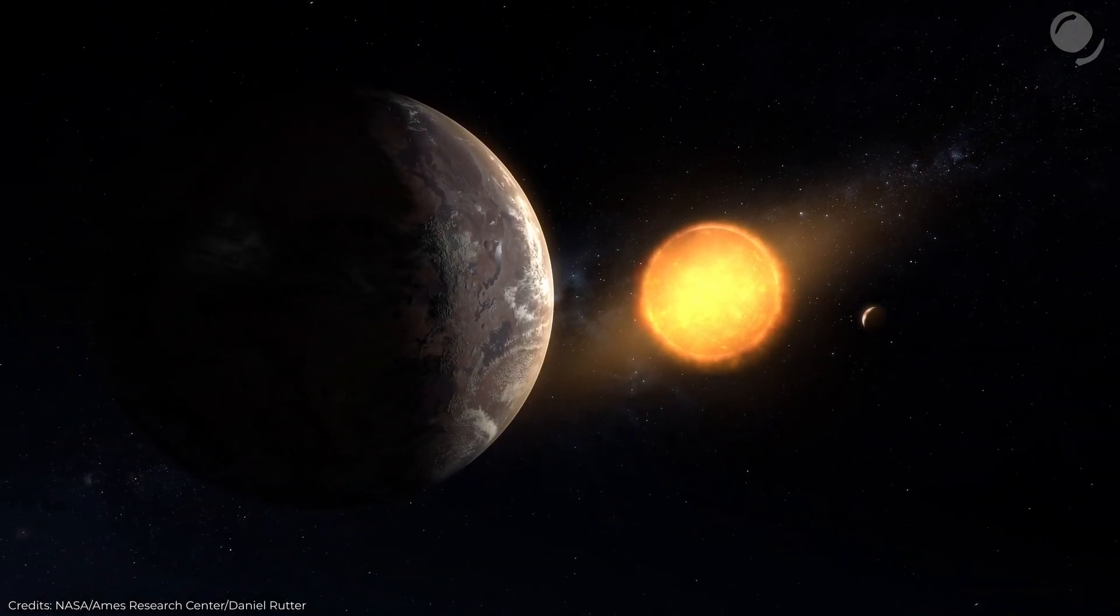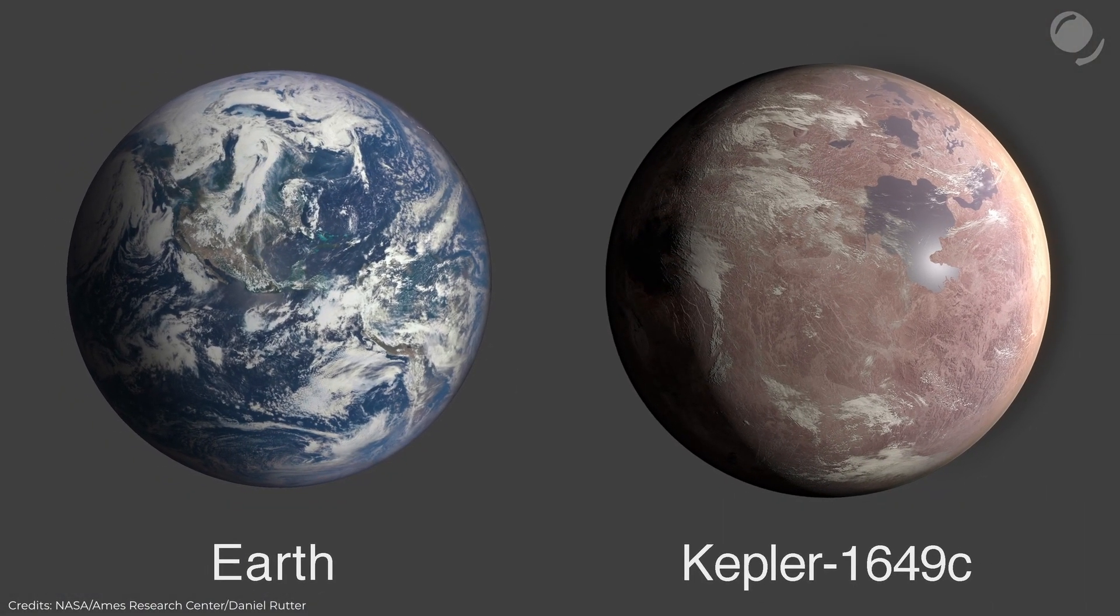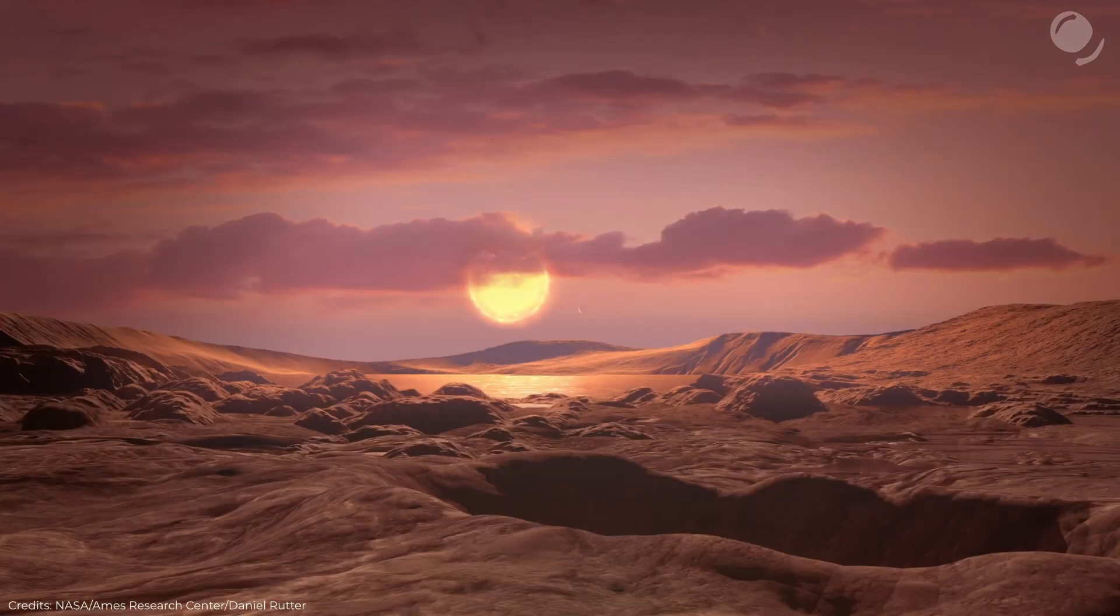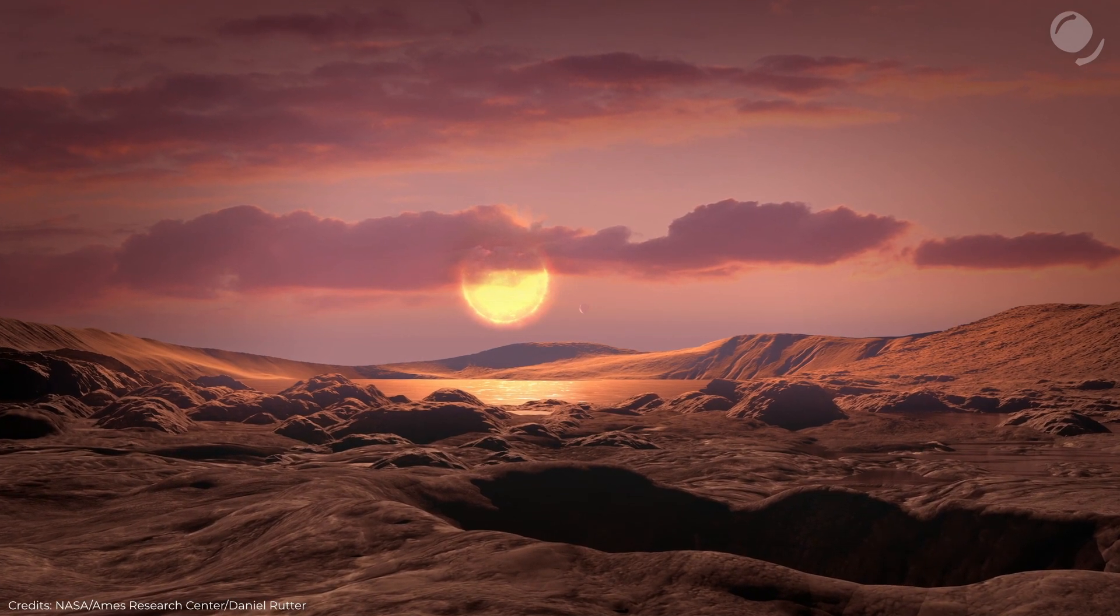Good examples would be the planet TOY-700d or Kepler-1649c. The planet, according to scientists, is only 6% larger than Earth. It is likely in habitable zone, which means it is not too far from and not too close to its star. So liquid water could exist on its surface, which is essential for life as we know it.